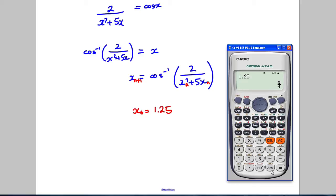And now we're going to type this function here. So the inverse cos of a fraction and 2 is on the top and we have xn squared. So I'm going to have answer squared plus 5 times answer. I'm going to close that bracket. So press equals. That gives me my first answer.